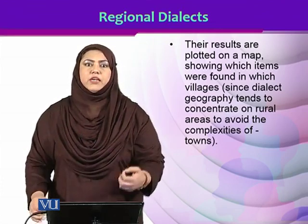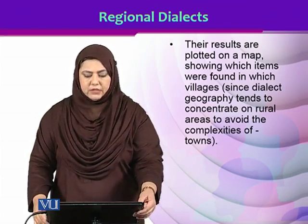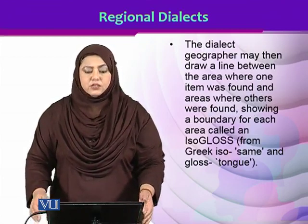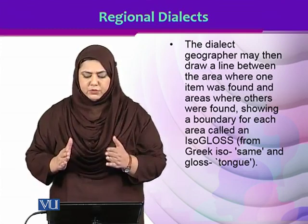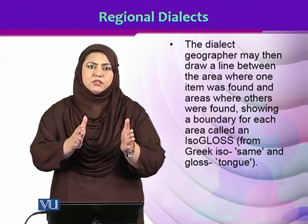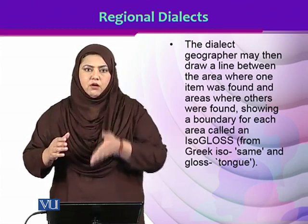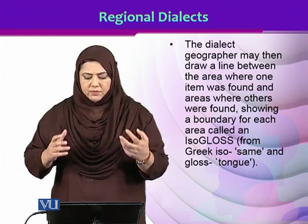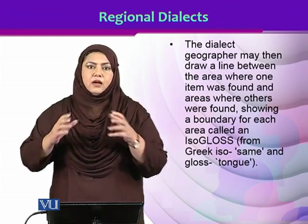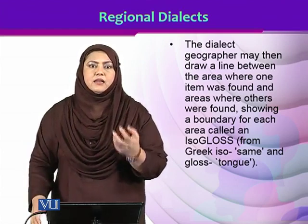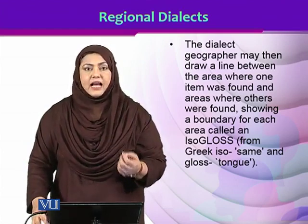These dialect geographers would then draw a line between the area where one item is found and where another item is found, and they would use that line to show the boundary for a particular area. They would name this area an isogloss.